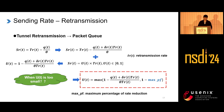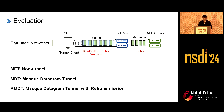We conducted detailed tests under emulated network conditions, using netem to emulate the network between the client and the tunnel server, as well as between the tunnel server and the server. The client-to-tunnel-server link was emulated with bandwidth, delay, and packet loss. The tunnel-server-to-server link was emulated with latency only. Our comparison baselines include MFT (no tunnel, direct forwarding), MDT (datagram tunnel without retransmission), and RMDT (datagram tunnel with retransmission).